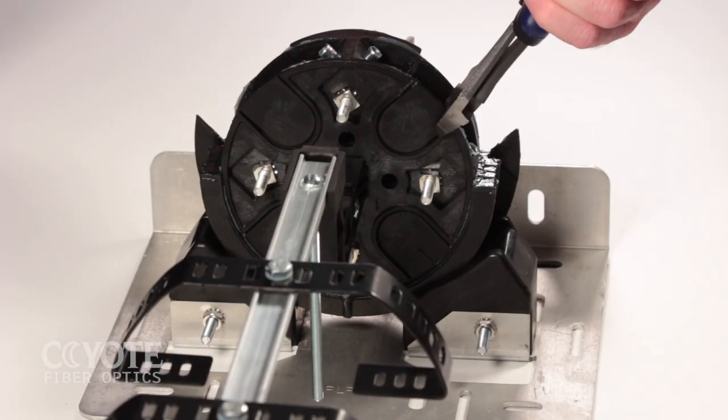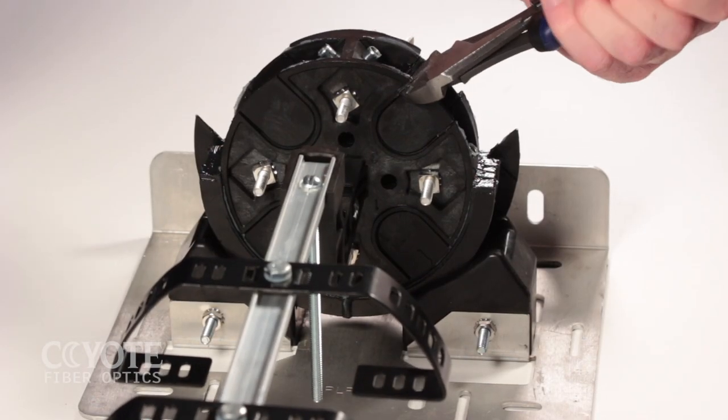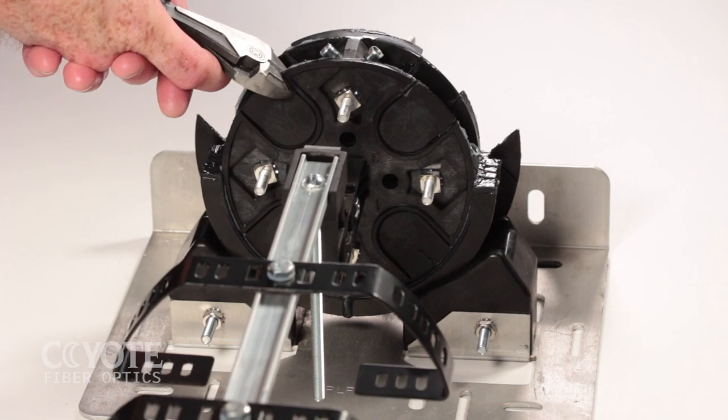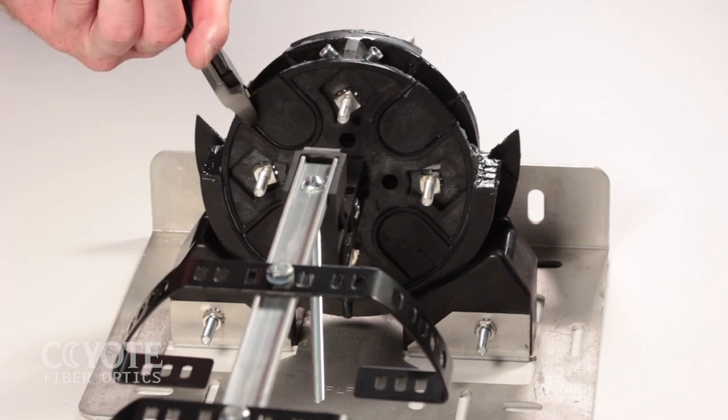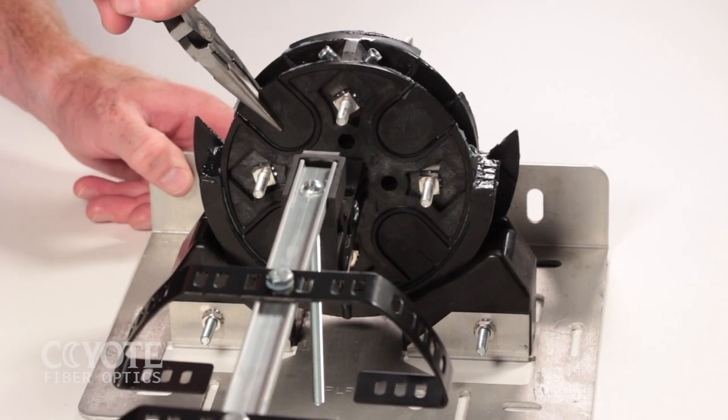Using side cutters, snip the outer corners of the knockout tabs in the end plate. Remove the tabs with pliers.